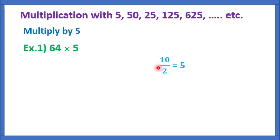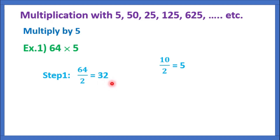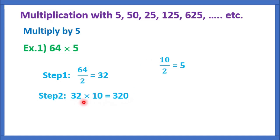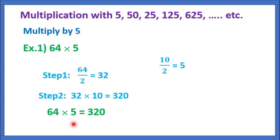Step 1: 64 by 2 is equal to 32. We get 32. Now, Step 2: we have to multiply by 10. That is, 32 into 10 is equal to 320. This is the answer. So, 64 into 5 is equal to 320.